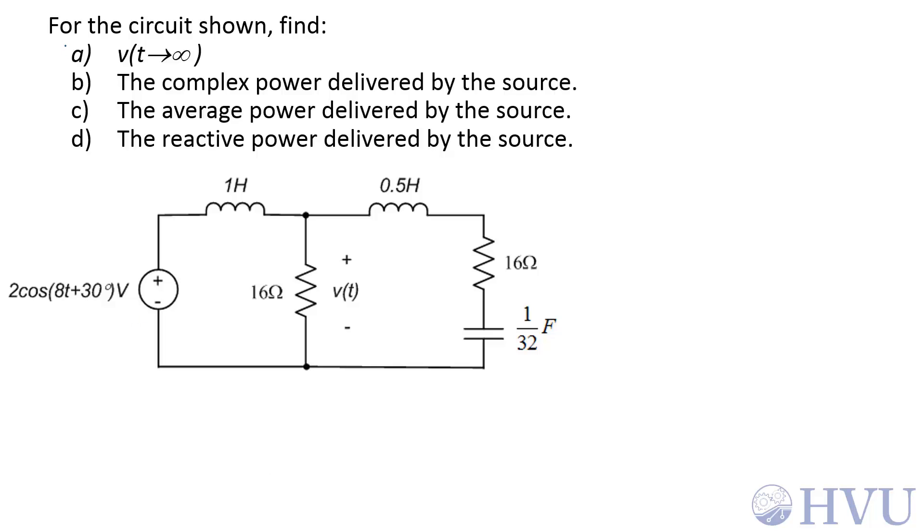We're given this circuit and we want to find out a variety of things about it. The first thing is the voltage across the 16 ohm resistor, V(t), as a function of time as t goes to infinity.